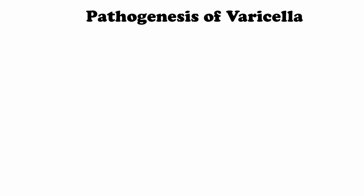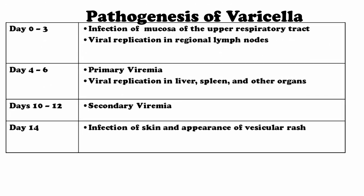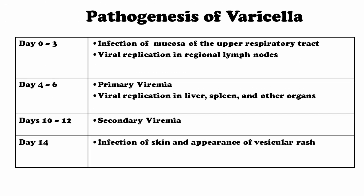Now, pathogenesis of varicella. Day 0 to day 3: infection of mucosa of the upper respiratory tract, viral replication in regional lymph nodes. Day 4 to day 6: primary viremia, viral replication in the liver, spleen and other organs. Day 10 to 12: secondary viremia — that is, all over your body the peripheral sections and all of the organs are filled with viruses.